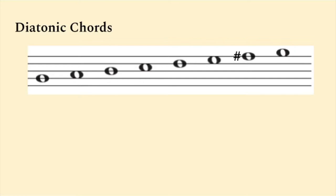To build a diatonic chord, there are three main steps. First, place the notes of the G major scale. This is shown right now.